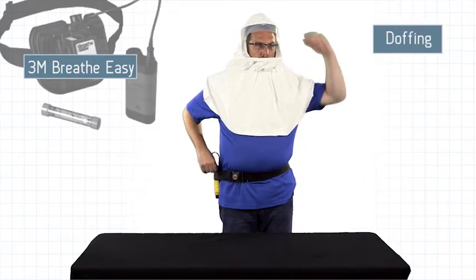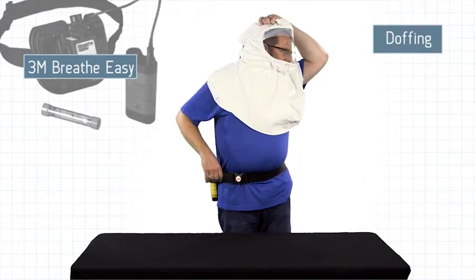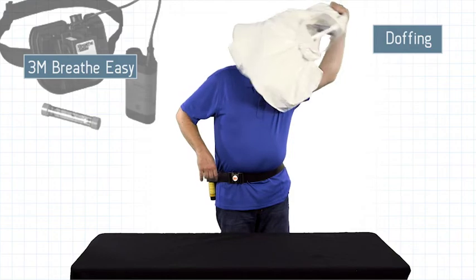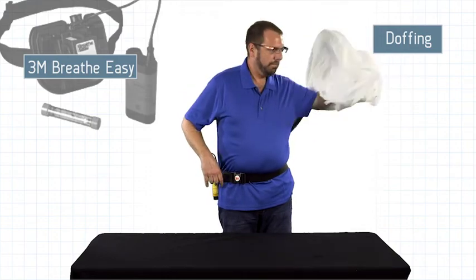To doff, turn the PAPR unit off. Remove the hood by grabbing a generous amount of fabric at the top and gently pulling out and away.